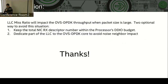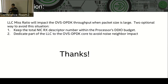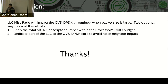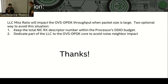In conclusion, the last level cache miss ratio will impact OVS-DPDK throughput significantly. There are two ways to avoid this situation: first, keep the total NIC buffered packet number within the processor's DDIO budget; second, dedicate part of the last level cache to the OVS-DPDK core to avoid noisy neighbor impact. That's all for my topic. Thank you.